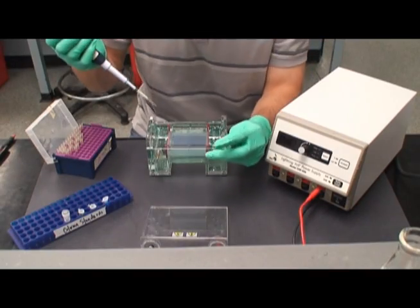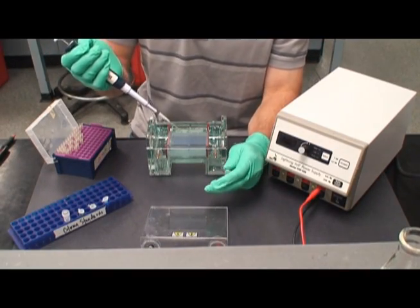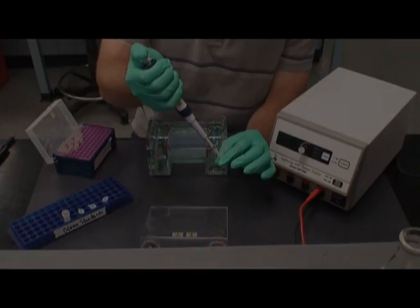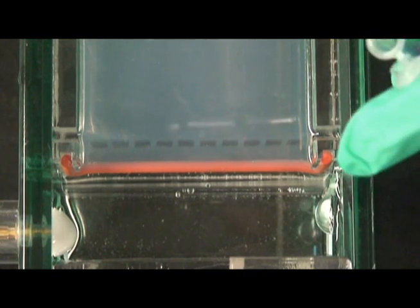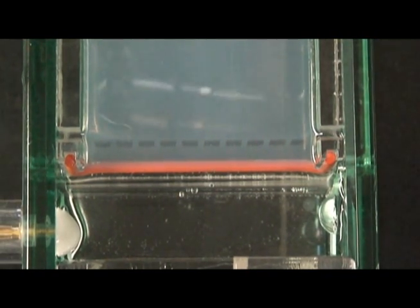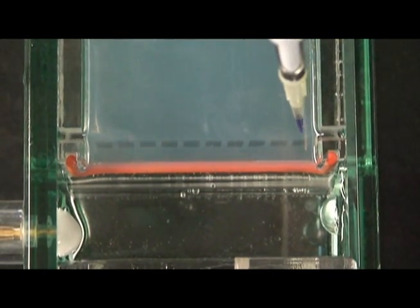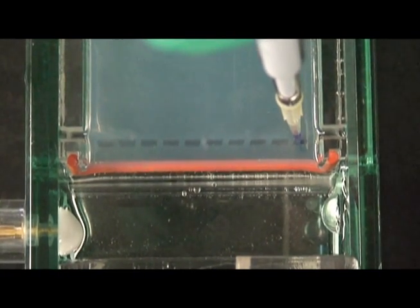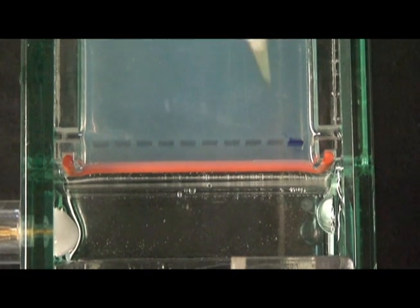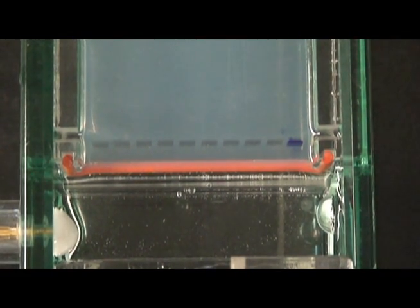With the wells appropriately positioned, carefully pipette 20 microliters of the desired sample into each well. When loading a well, make sure to insert the pipette tip slowly as to not puncture the gel. After slowly expelling the sample, keep the micropipette plunger depressed until the tip is removed. Otherwise, the sample will be sucked back into the tip.